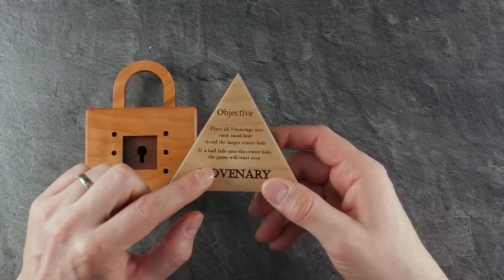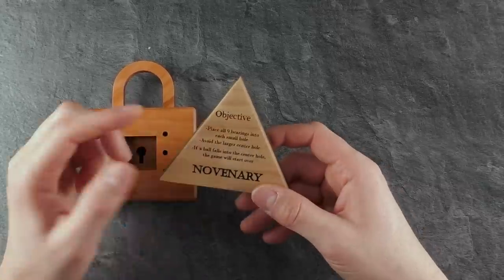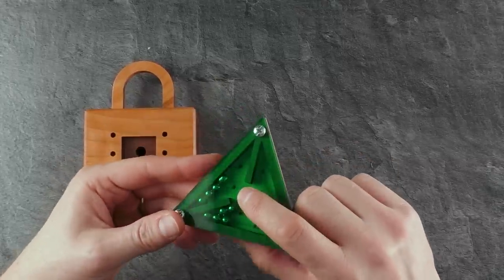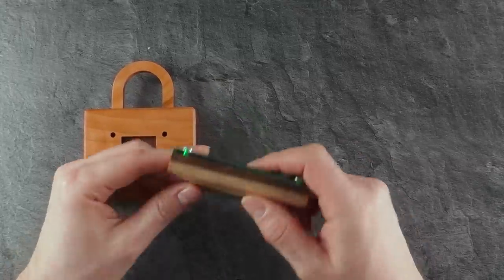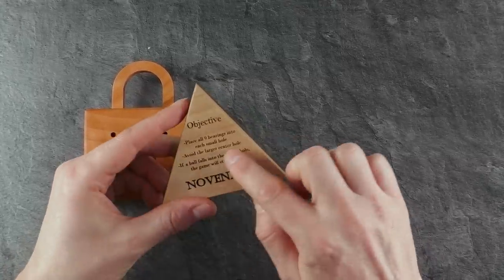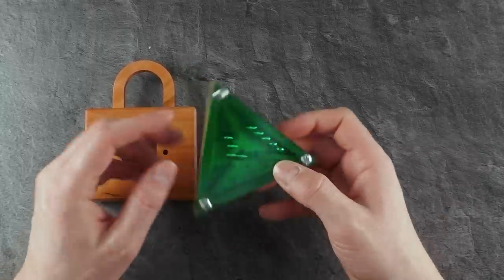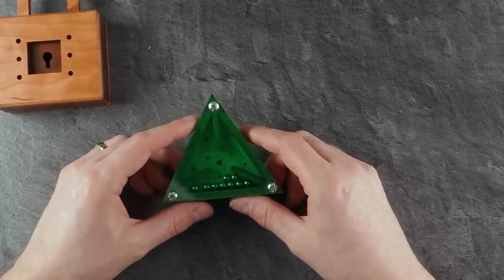And this one here comes with an instruction on the rear saying place all the bearings into each small hole. So there are nine of these small holes here inside, one big one in the center. But avoid the large hole in the center. If a ball falls into the center hole the game will start over. So let's see how long it will take me to solve.